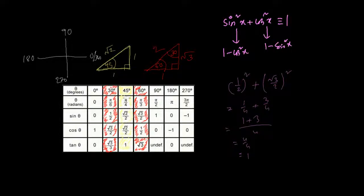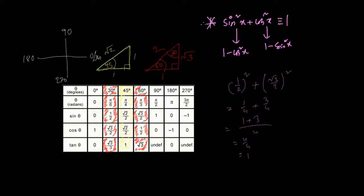We can verify with 60°: sine(60°) = √3/2 and cos(60°) = 1/2 — the same result. Even at 90°: sin²(90°) + cos²(90°) = 1² + 0² = 1. This confirms the identity. There is another identity: sin(x)/cos(x) ≡ tan(x), meaning whenever you have sin(x)/cos(x) it is equivalent to tan(x).